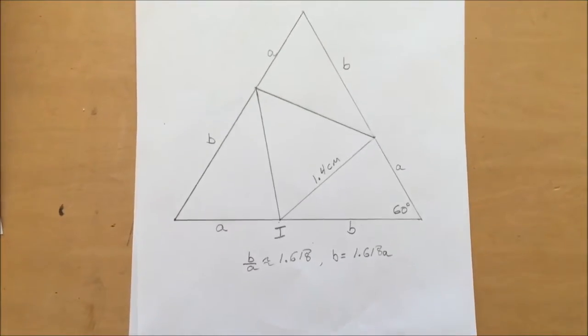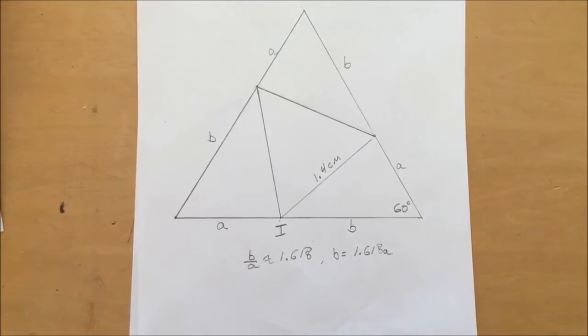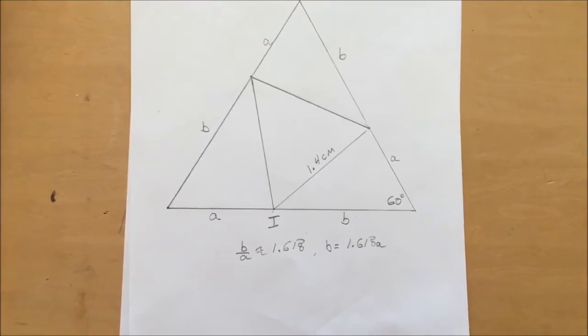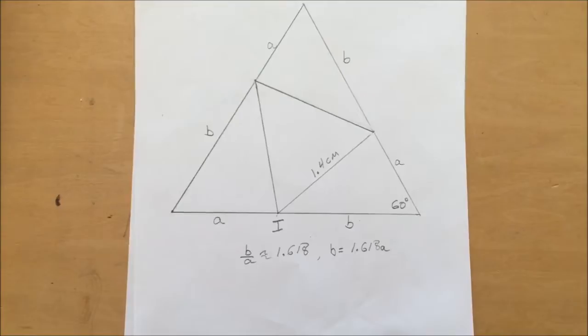That gives us B is approximately equal to 1.618 times A. We can use the law of cosines to write an equation and solve for A.